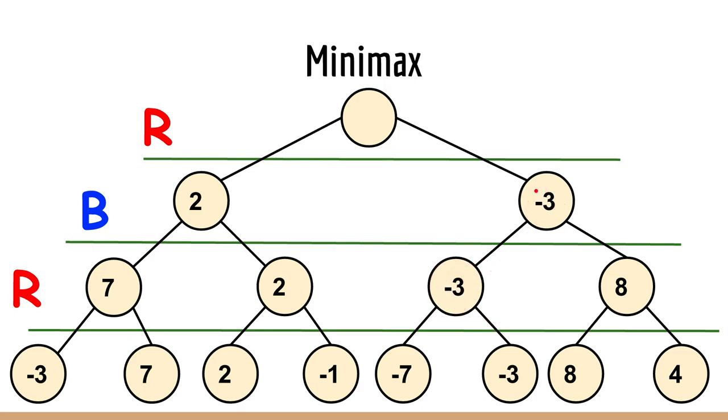So minus three is here but red can choose two instead of minus three. So that's what it does, it chooses two. And so this entire position, all these nodes, these eight nodes, evaluate to a value of two in our minimax algorithm.